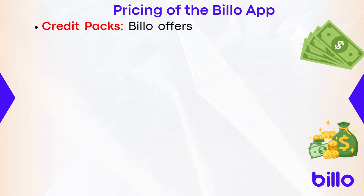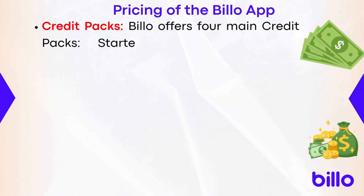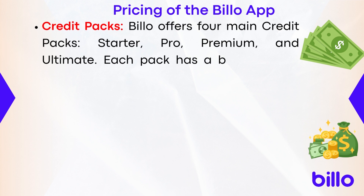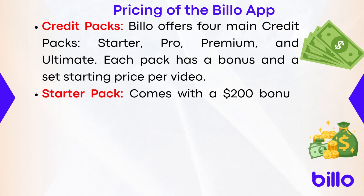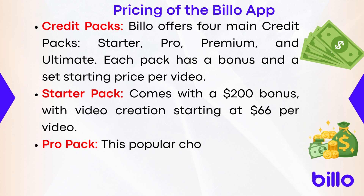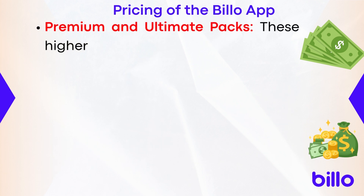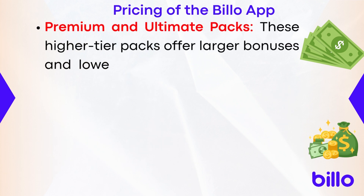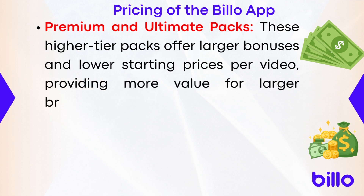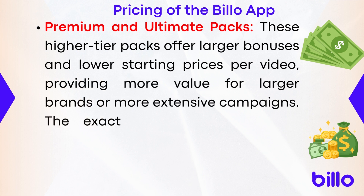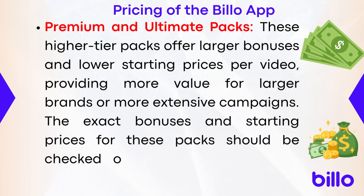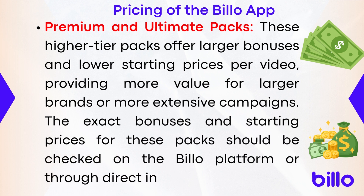Billo offers four main credit packs: Starter, Pro, Premium, and Ultimate. Each pack has a bonus and a set starting price per video. The Starter pack comes with a $200 bonus with video creation starting at $65 per video. The Pro pack — a popular choice — offers a $625 bonus with a starting cost of $63 per video. The Premium and Ultimate packs offer larger bonuses and lower starting prices, providing more value for larger brands or more extensive campaigns.